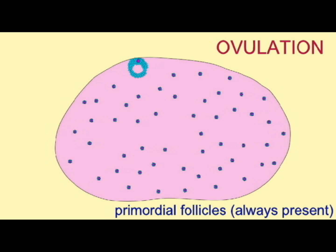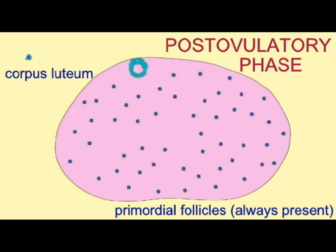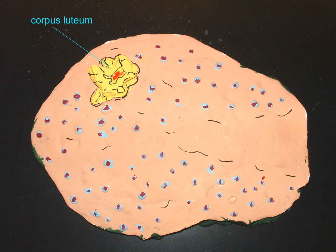After ovulation, the cells of the follicle which did not leave with the oocyte into the oviduct form a brief corpus hemorrhagicum as blood clots from the rupture, and then form a temporary endocrine structure known as the corpus luteum. This is primarily composed of the thecal cells and the follicular cells, which undergo changes known as luteinization.